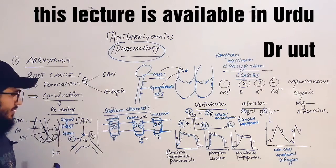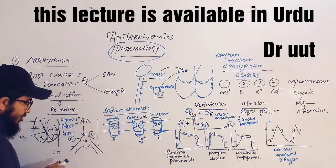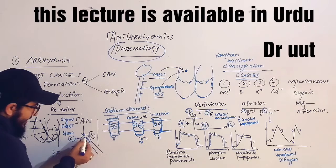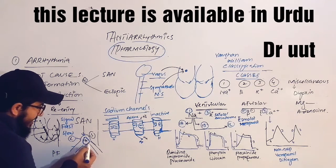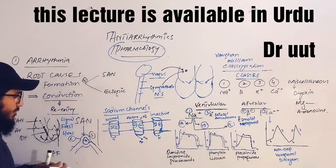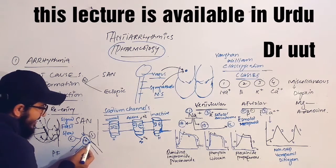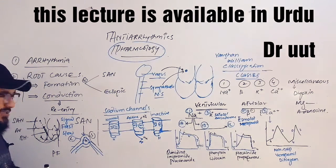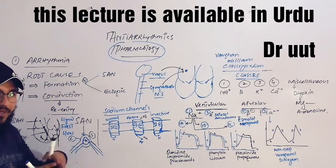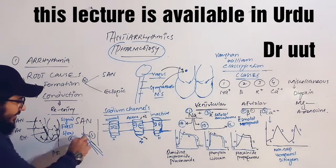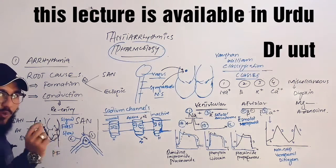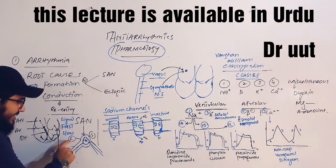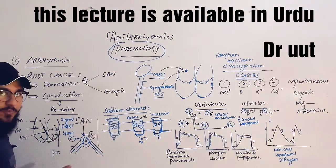Let us study re-entry in more detail. The SA node normally sends the signal to the AV node, where it splits into a slow path and a fast path. The fast path signal reaches the ventricles first and stops the slow path. The slow path has a very short refractory period, while the fast path has a long refractory period, meaning it takes more time to re-activate.